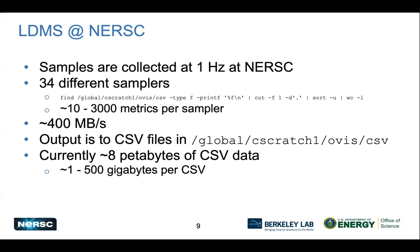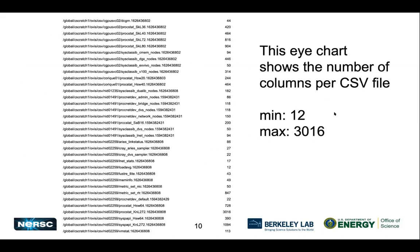It's not just one big file - each file is somewhere between about one gigabyte and about half a terabyte, with a few outliers a little bigger. This chart shows the number of columns per CSV file - it's a pretty big design space. Some have about 10 columns, others have 3,000 columns.